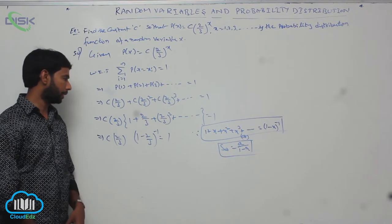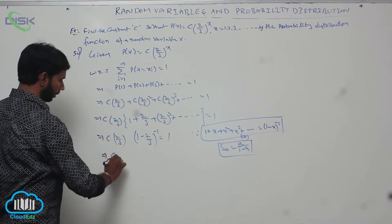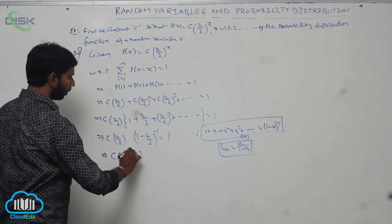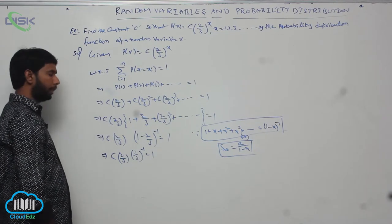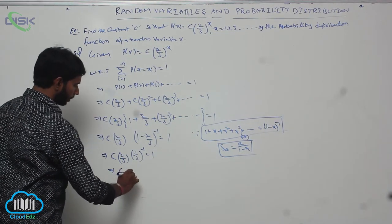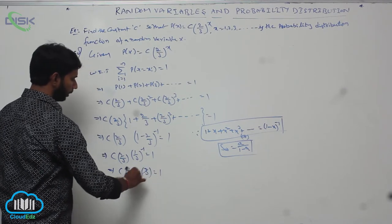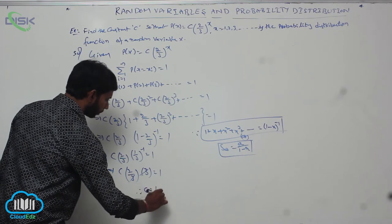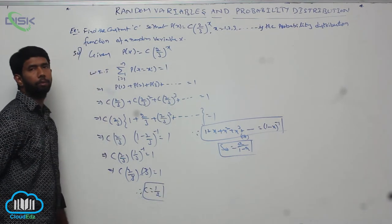We get 1 minus (2/3) equals (1/3), so C times (2/3) times (1/3)^(-1) equals 1. Since (1/3)^(-1) equals 3, this gives C times (2/3) times 3 equals 1. The 3s cancel, so C times 2 equals 1, therefore C equals 1/2.